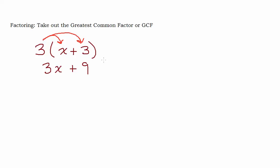Taking out the greatest common factor is basically reversing this process. So for example, I would give you something like 3x plus 9 — I'd give you the answer and ask you to rewrite it as undistributed. That's not an official math term, but you're basically undistributing — you're taking something out.